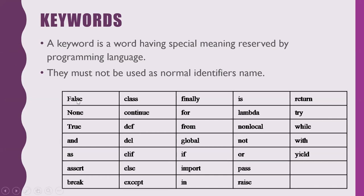Some keywords in Python start with capital letters — those are the exceptions: False, True, and None. All remaining keywords are in lowercase, such as class, and, else, break, del, and others. These keywords will be studied as part of the programming section.